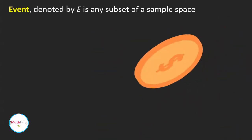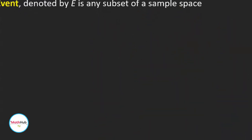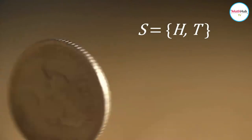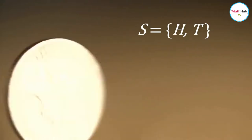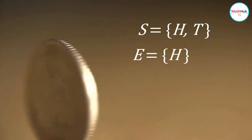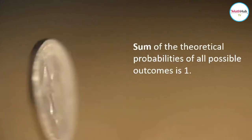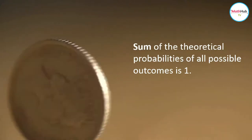Any subset of a sample space is called an event, and it is denoted by letter E. For example, the sample space for the coin tossing experiment is S = {H, T}, where H is the event for the heads-up outcome and T is for the tails-up outcome. The subset E containing H is the event of landing heads up when the coin is tossed. If you sum up all the theoretical probabilities of all the possible outcomes, it should be equal to 1.